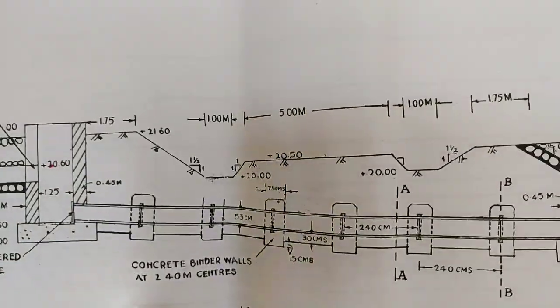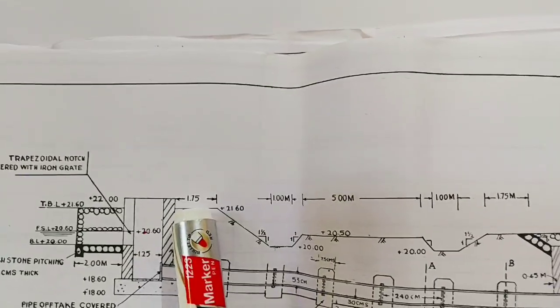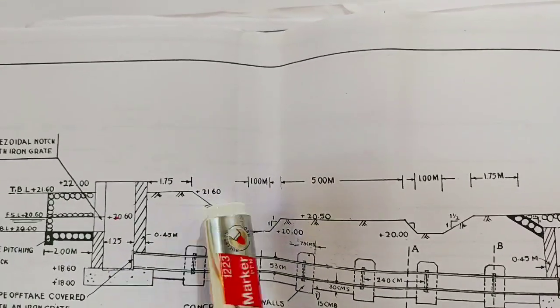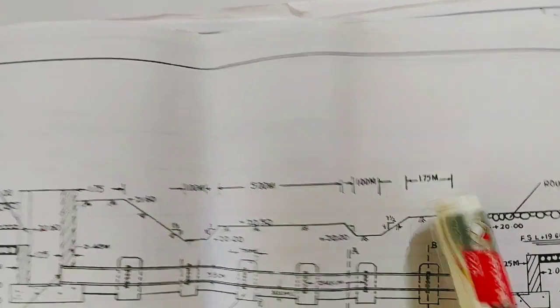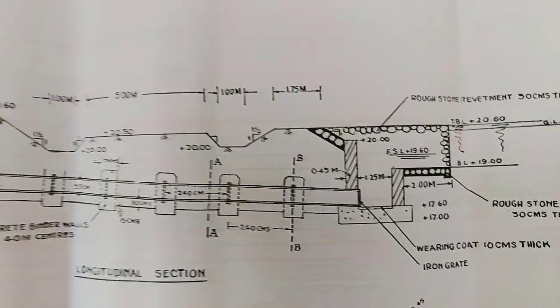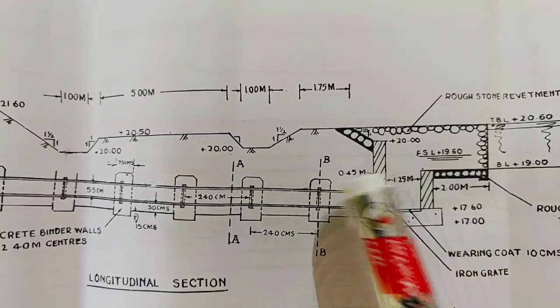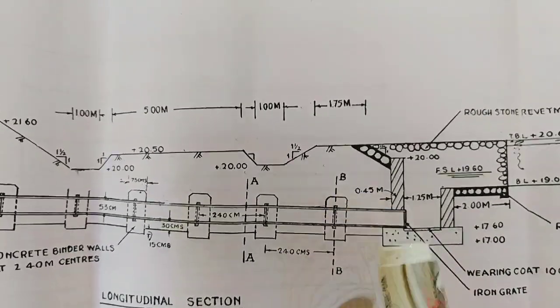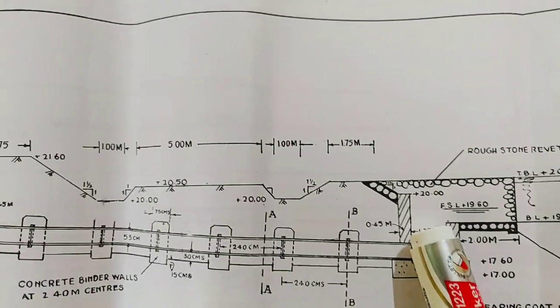14 meter is the length of the inlet level. On the side slope, the embankment is 1.5 to 1. 5 meter width, we have given the embankment to 1.5 to 1. Once again, 1.75. We have given the embankment of 1 and a half to 1.